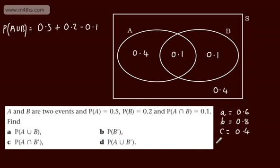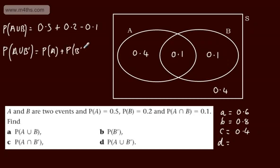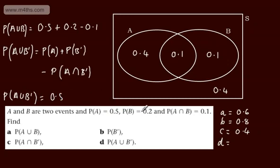For part D, we want the probability of A union not-B. Using the addition formula: P(A∪B') = P(A) + P(B') − P(A∩B'). We have P(A) = 0.5, P(B') = 0.8, and P(A∩B') = 0.4. So the calculation is 0.5 + 0.8 − 0.4, which gives a total of 0.9.